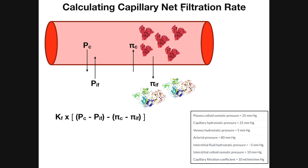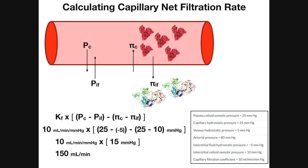Now let's calculate the net filtration rate given these values. The equation takes the capillary hydrostatic pressure p sub c minus the interstitial fluid hydrostatic pressure, then subtracts — in parentheses for order of operations — the plasma colloid osmotic pressure pi sub c minus the interstitial colloid osmotic pressure. That entire bracketed result is then multiplied by the capillary filtration coefficient k sub f, which in this case is 10 milliliters per minute per millimeter of mercury.